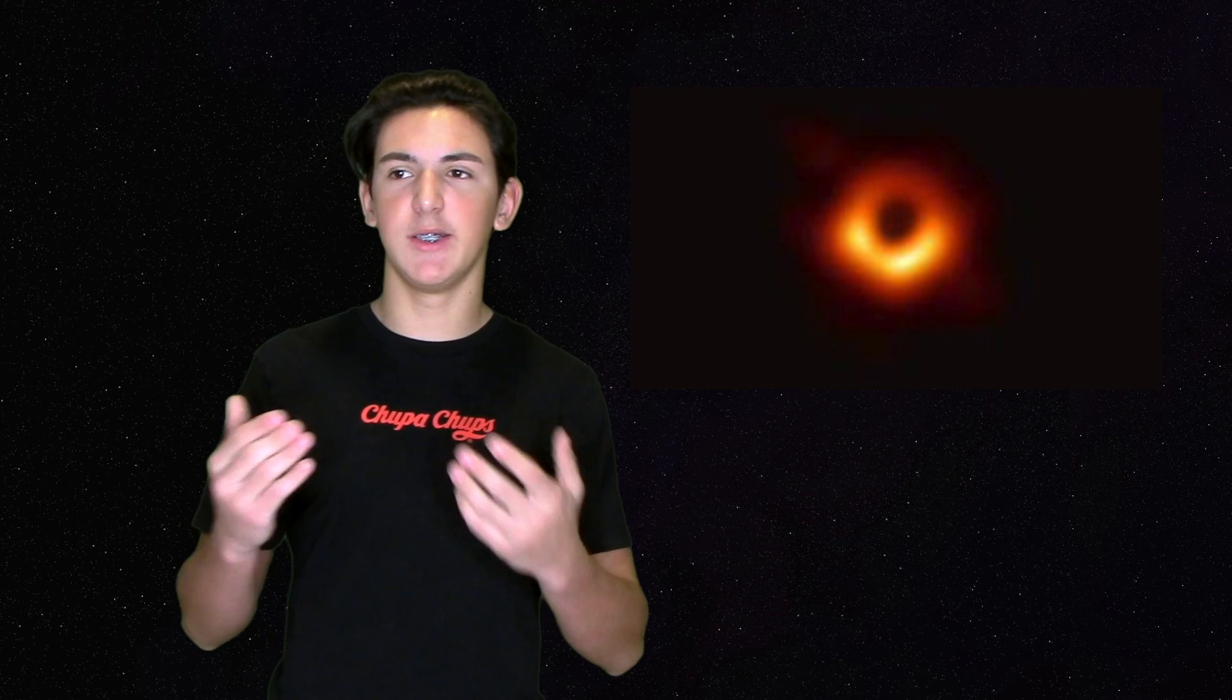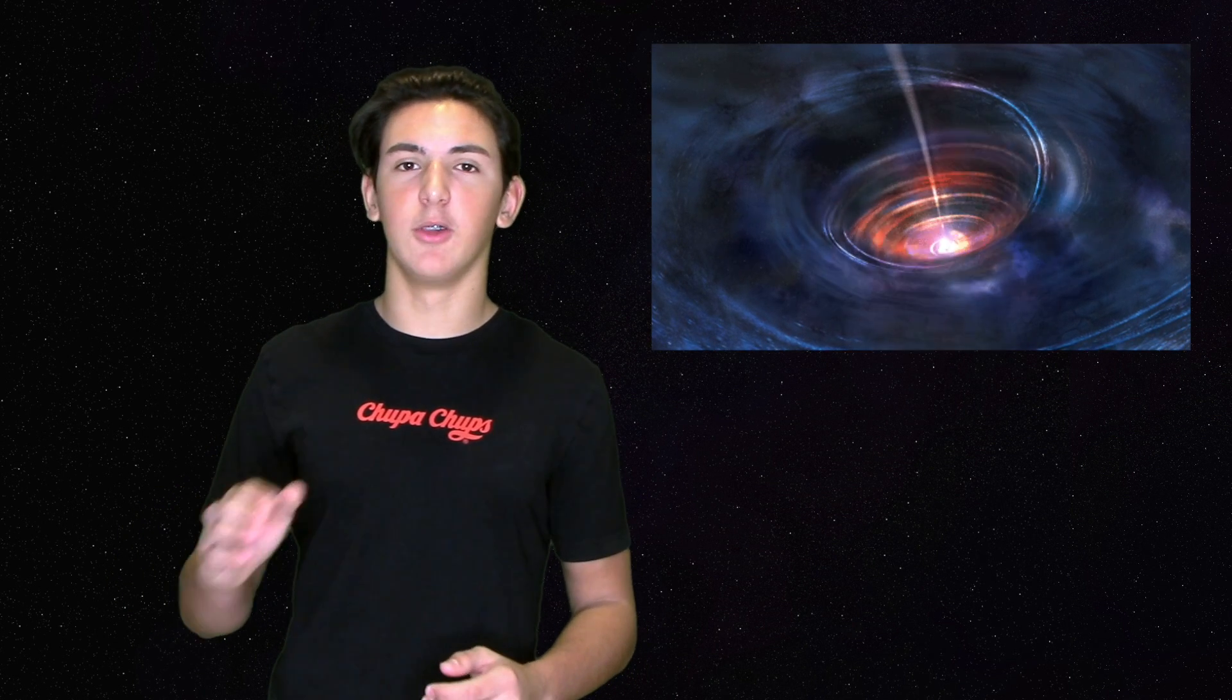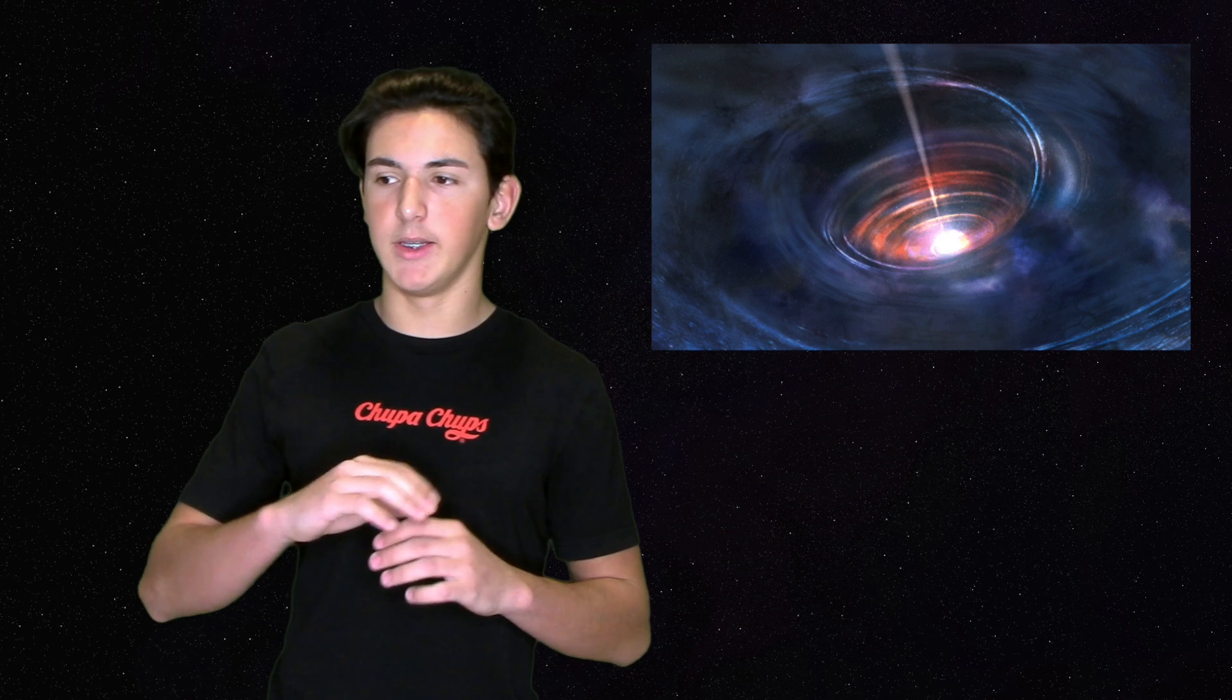Last year, astronomers showed us the first picture of a black hole ever taken, which was amazing because we can see something that doesn't give off light. Now they're using x-rays, kind of like echolocation, to create a detailed map of the event horizon of a black hole.